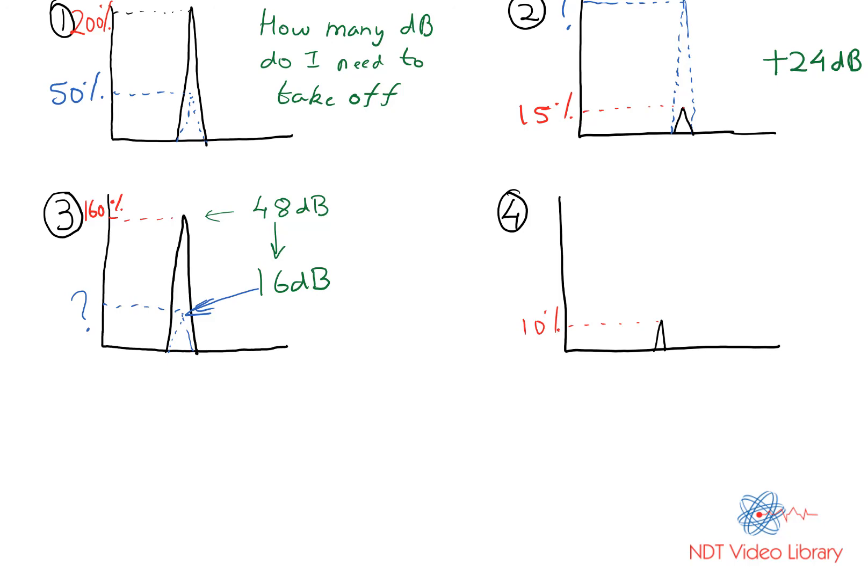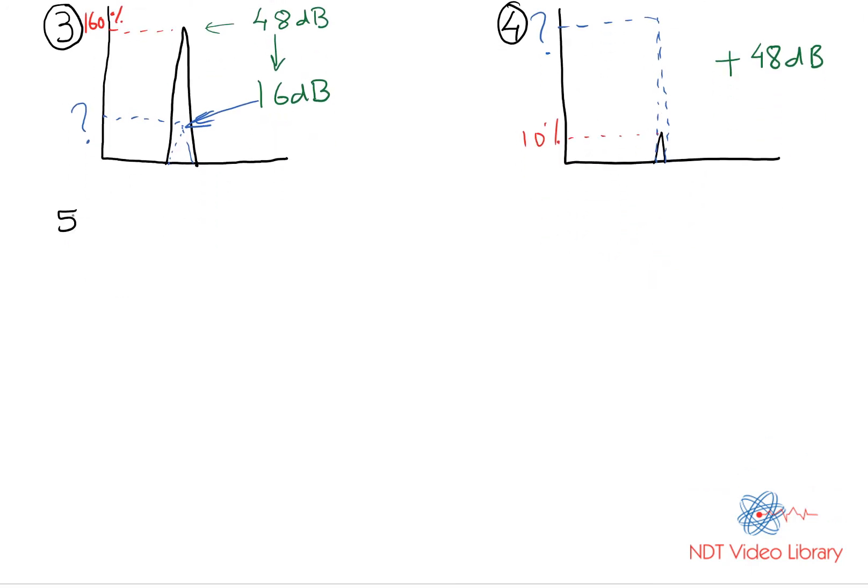Finally number four: the signal amplitude initially is 10% and I add 48 decibels. What would be the final signal amplitude? Take another one, fifth one: A-scan display is showing you signal amplitude of 800% and the question is, you take off 25 decibels, what would be the final signal height? So all these five questions - let me know the answers in the comments below.